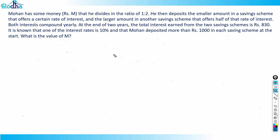Let's look at this question from 2021. Mohan has some money rupees m that he divides in the ratio 1:2. He deposits the smaller amount in a savings scheme at a certain rate of interest and the larger amount in another scheme that offers half that rate. Both compound yearly. At the end of two years, the total interest earned is ₹830. The interest rate is 10% and Mohan deposited more than ₹1000 in each scheme. What is the value of m?